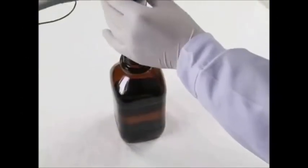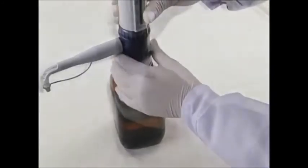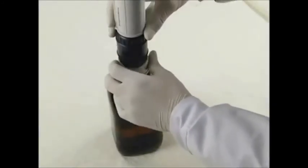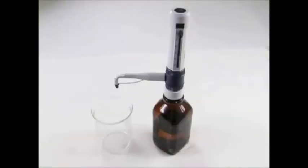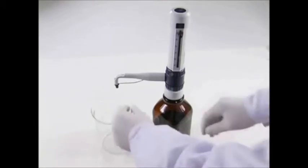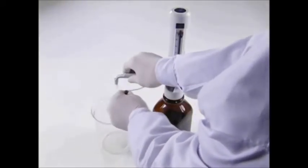Attach the dispenser onto a GL45 screw thread bottle. For other bottles, use the accompanied discharge belt. Hook the discharge belt and carefully remove the closure cap.